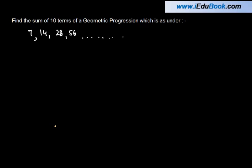Find the sum of 10 terms of a geometric progression which is as under: 7, 14, 28, 56 and so on.